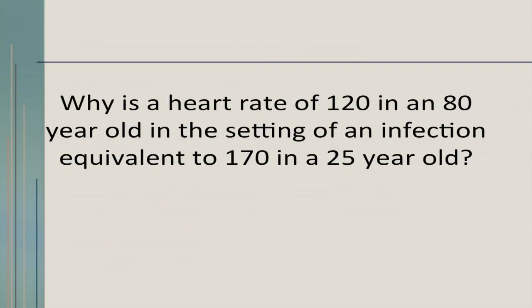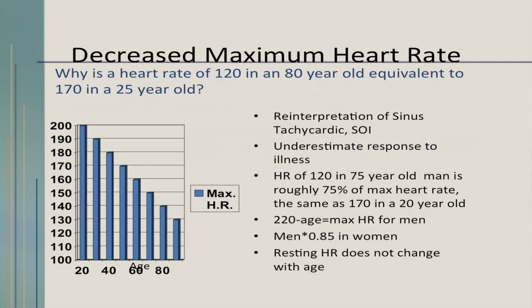Why is a heart rate of 120 in an 80-year-old in the setting of an infection equivalent to 170 in a 25-year-old? Because there's decreased maximum heart rate as you get older — there's a linear decline. A heart rate of 120 in a 75-year-old man is roughly 75% of the maximum heart rate, the same as 170 in a 20-year-old. When there's stress, the heart rate will not increase as much. However, the resting heart rate doesn't change with age — that's important to understand.